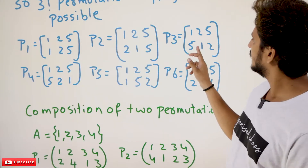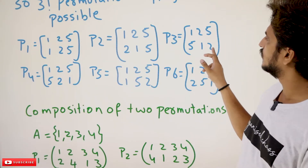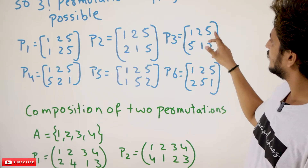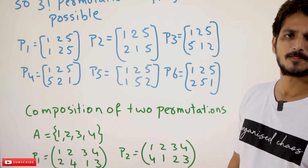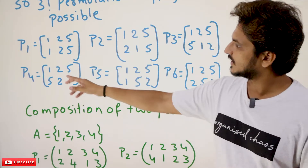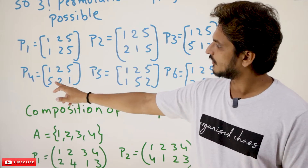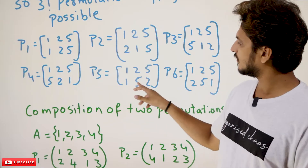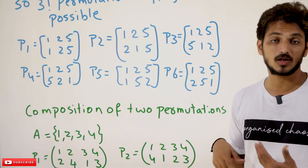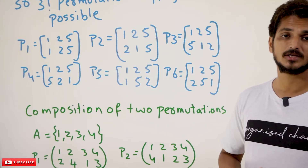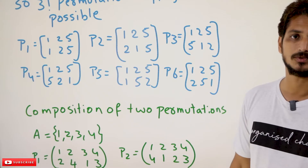The second one: 1 is mapping to 5, 2 is mapping to 1, 5 is mapping to 2. Similarly, other arrangements like 1→1, 2→5, 5→2 and 1→5, 2→2, 5→1 and 1→2, 2→1, 5→5 — these are all the different permutation functions possible.